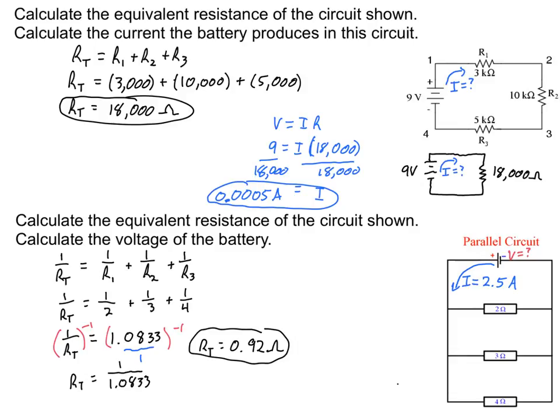Something that I want you to notice coming back, notice how in series, as I add in different resistors, my equivalent resistance goes up. And the equivalent resistance is always greater than any of the individual resistors. On the other hand, with parallel, as I add in resistors, my equivalent resistance actually goes down. And the total resistance, the equivalent resistance, is always less than any individual resistor.